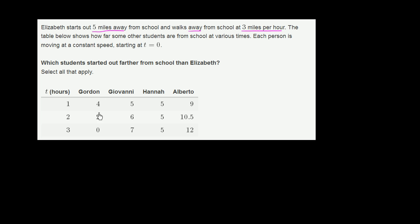So essentially, we need to figure out where these students were at time equals 0. We know where they were at time 1, 2, and 3. So let's think about their rate towards or away from school. Remember, this is distance from school. So as we increase...